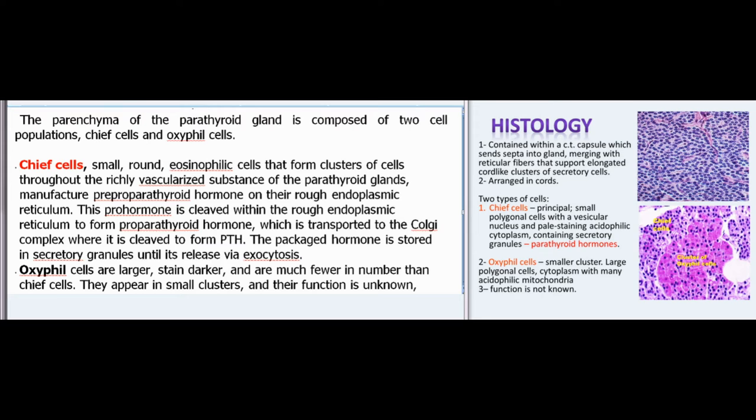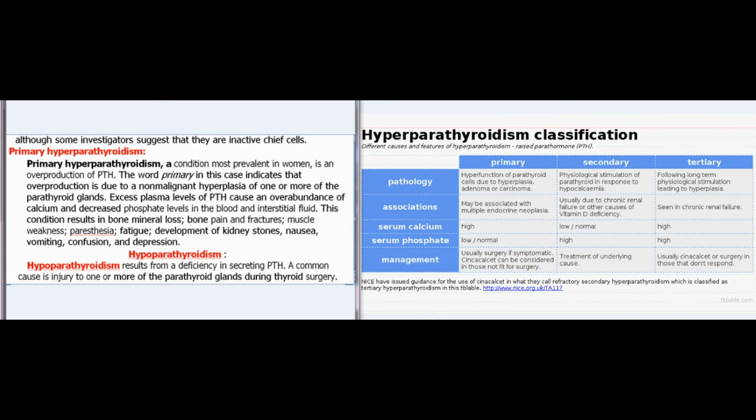The parenchyma of the parathyroid gland is composed of two cell populations: chief cells and oxyphil cells. Chief cells — small, round, eosinophilic cells forming clusters throughout the richly vascularized substance — manufacture pre-proparathyroid hormone on their rough endoplasmic reticulum. This pro-hormone is cleaved within the RER to form pro-parathyroid hormone, which is transported to the Golgi complex where it is cleaved to form PTH. The packaged hormone is stored in secretory granules until release via exocytosis. Oxyphil cells are larger, stain darker, and are much fewer in number; they appear in small clusters and their function is unknown, though some suggest they are inactive chief cells.